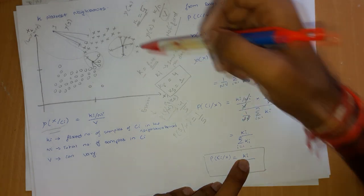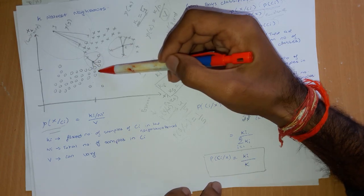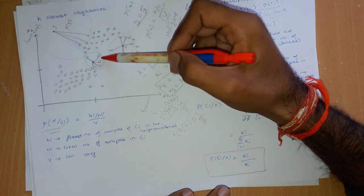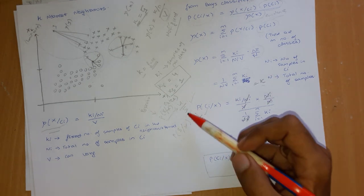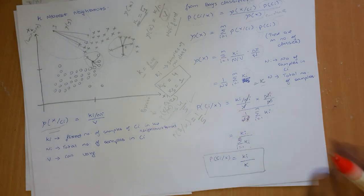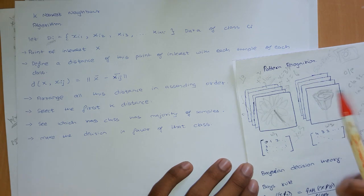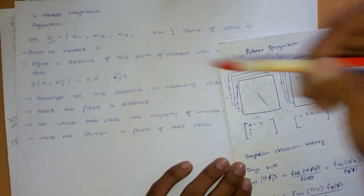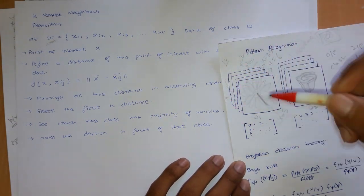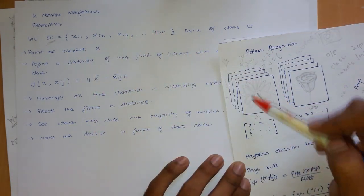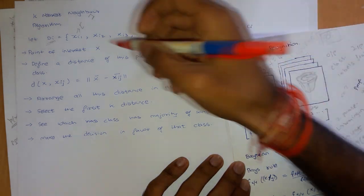This mathematical result confirms: probability of sunflower = 1/5 and probability of rose = 4/5, exactly as our intuition suggested. The decision rule is: assign the test sample to whichever class has the highest probability. That is the K-Nearest Neighbors algorithm.